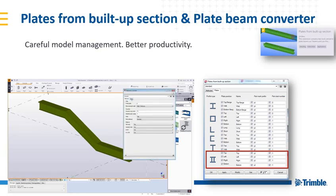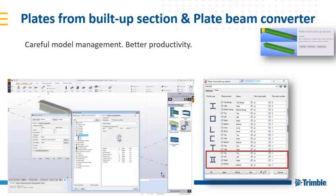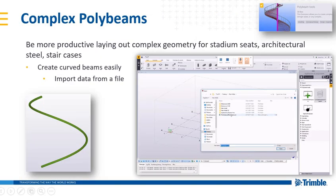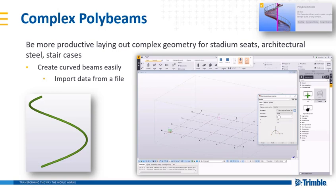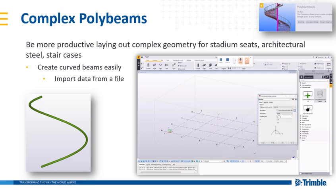The Plates from Build-Up Section extension is also available for previous versions. It consists of two applications aimed to help the detailing of plate beams used in many industries such as offshore and pre-engineered buildings. Unsymmetrical I-profiles will be supported with the new version, as well as symmetrical and unsymmetrical welded box profiles. Complex Polybeams is a tool included in the Polybeam Tools extension that allows you to easily create polybeams along different curved shapes such as ellipses and helices, with the latest development also adding the possibility of reading points from a CSV file.